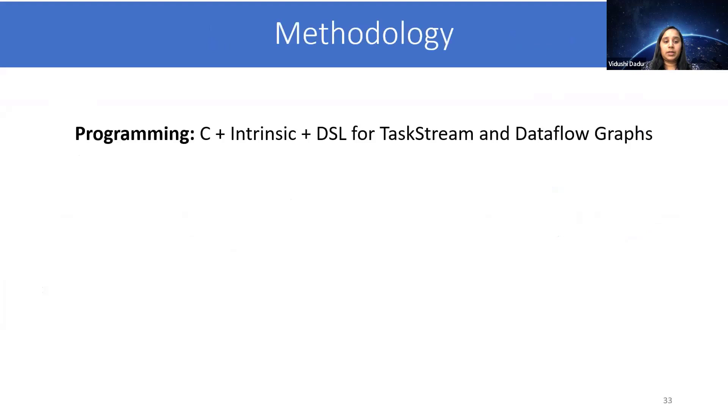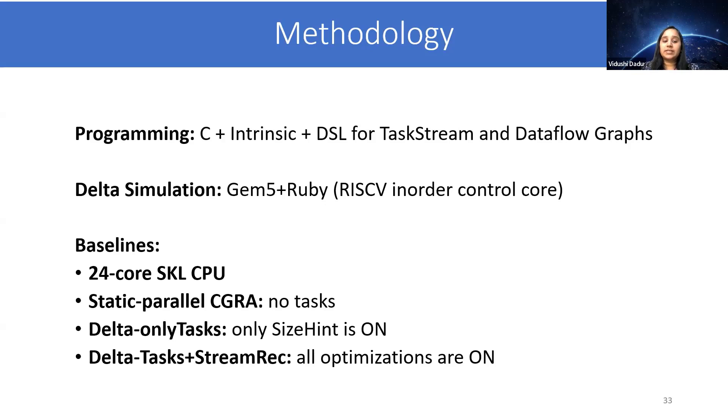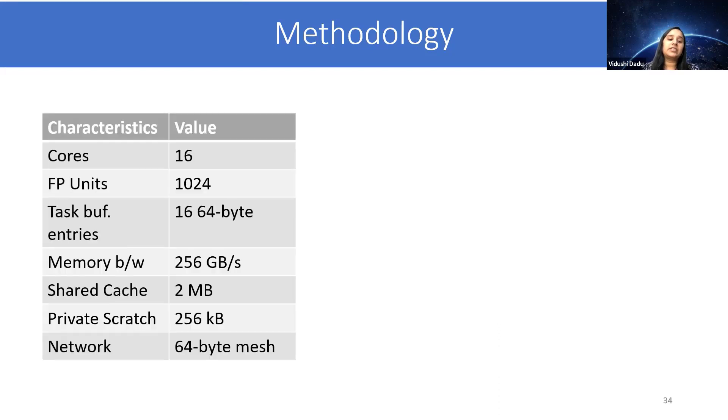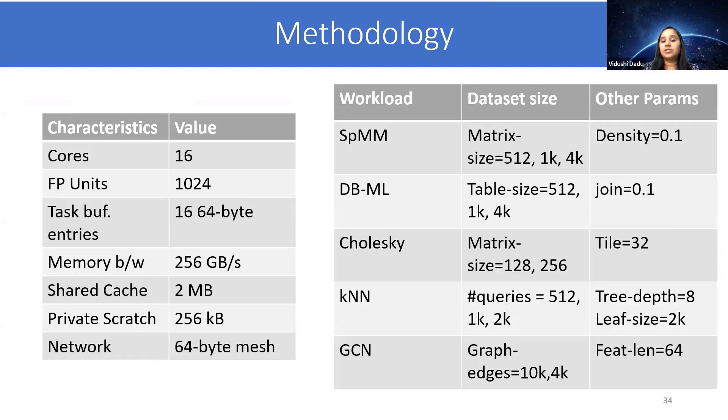Let's move to evaluation. We program Delta hardware using C plus intrinsic and use GSL for TaskStream and dataflow graphs. We simulate using GEM5 and Ruby. Our baselines are a 24-core SKL CPU, a static parallel CGRA which has no tasks and all the work will be scheduled by the control core, and then we study two configurations of our proposed hardware. One is only tasks where only the creation and size optimization is on. And the second is Delta with tasks and stream recovery, where all the optimizations are on. Here are the system configuration where we use 16 cores and 256 gigabytes per second memory bandwidth. We study five workloads using synthetic datasets with varying size and densities.